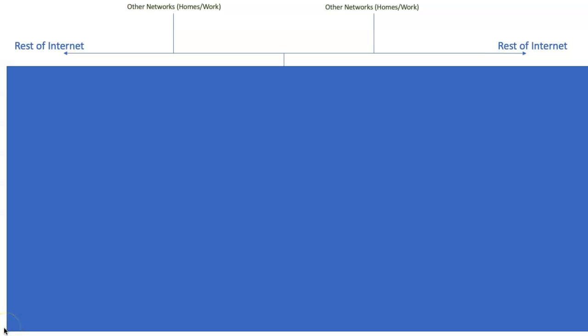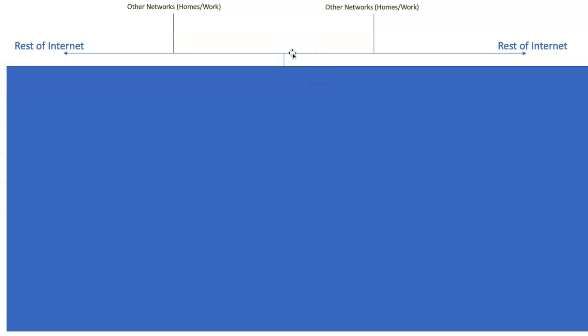We've learned a lot about the internet and how it works — routers, packets, hops, and IP addresses. We've referred to the internet as a wire that runs infinitely in both directions, and this little branch right here connects to our computer and gives us access. On the rest of the internet are all those routers that control how traffic flows and allow you to get to other computers.